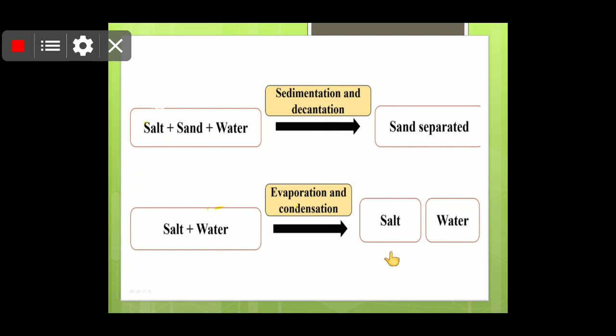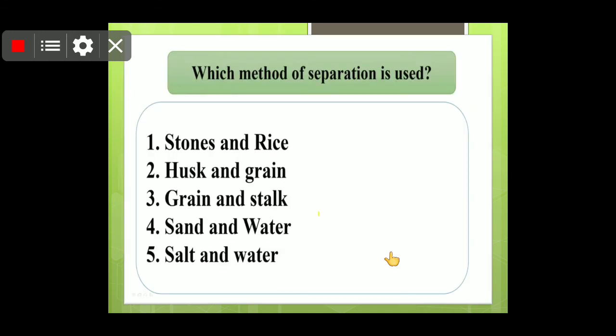If instead of sand there were iron filings, we could first use a magnet to remove the iron filings and then proceed with the further process. Based on the different properties one component has that another does not, and the physical state of the impurity to be separated, we can separate different components of a mixture.